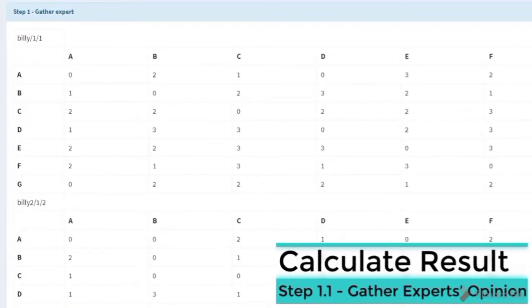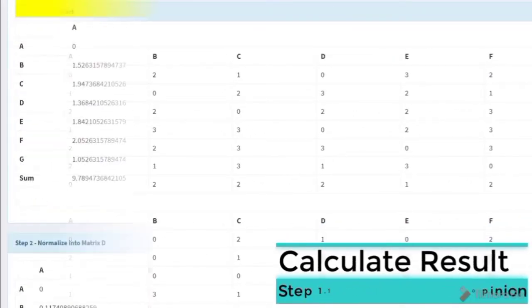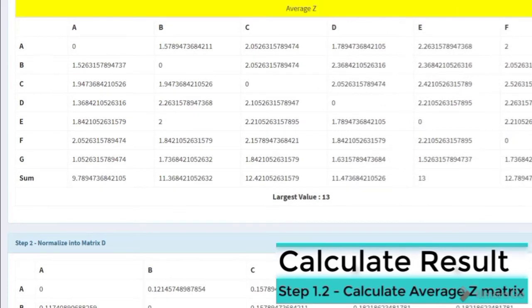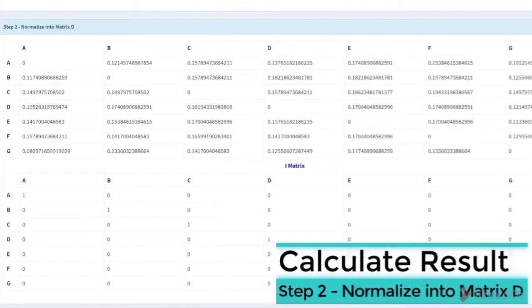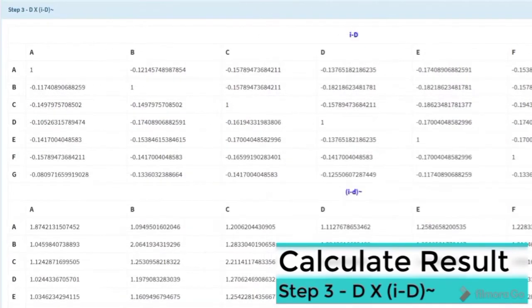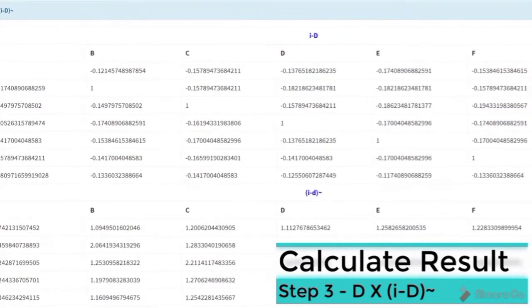The Dematel Dygraph gathers experts' opinions and calculates the average set matrix. The data will be normalized into matrix D, and then step 3 will be performed.